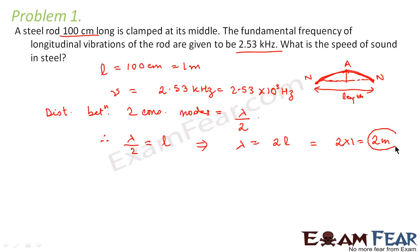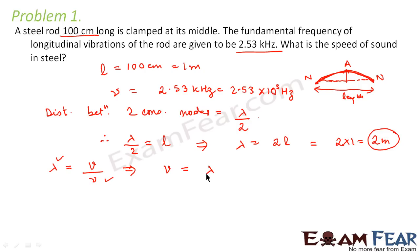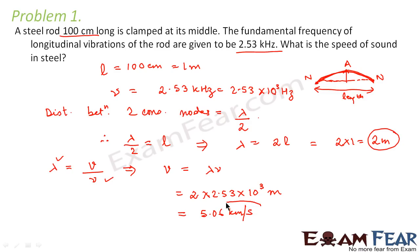So 2 meters is the wavelength associated with this vibration. Now we have to calculate the speed of sound in steel. We know that lambda is equal to speed divided by frequency, so speed is equal to lambda × nu, which is equal to 2 × 2.53 × 10³, which comes out to be 5.06 kilometers per second. That is the speed of sound in steel.